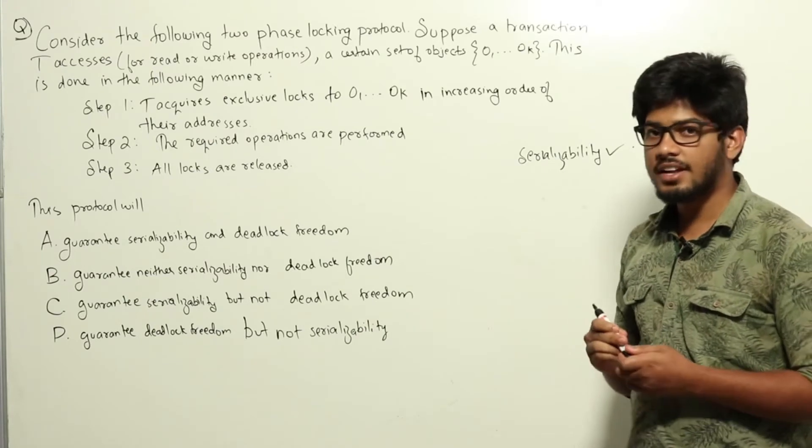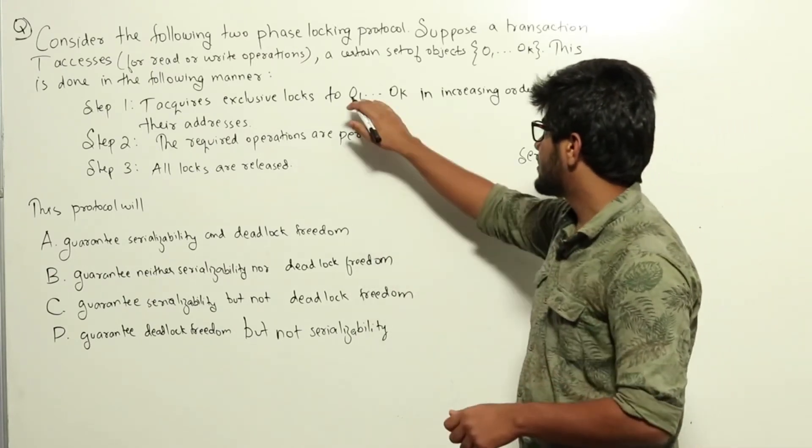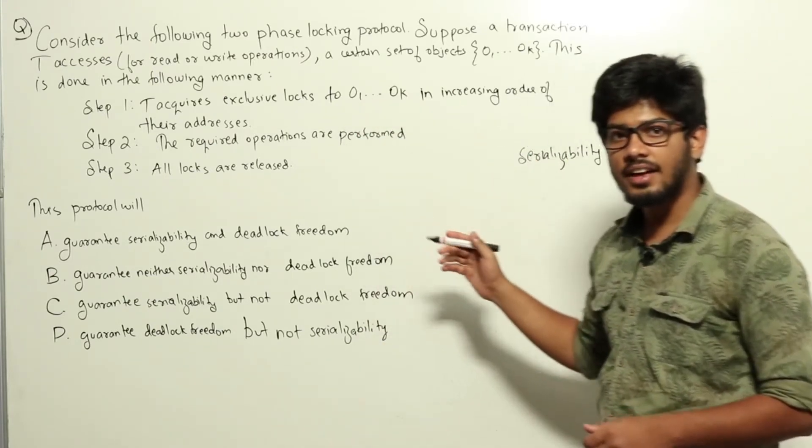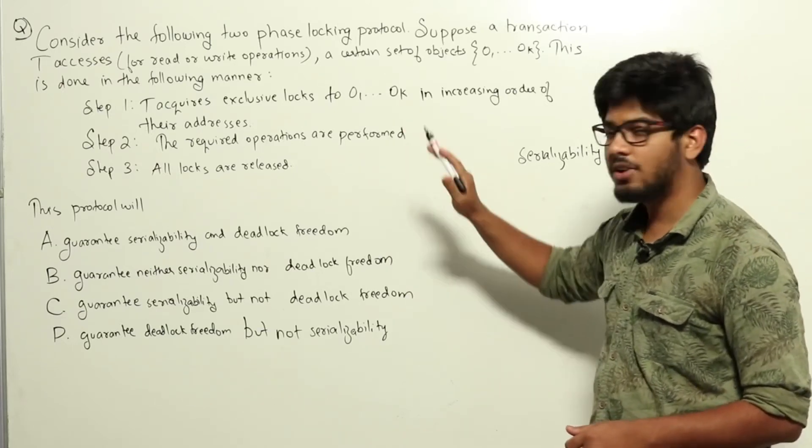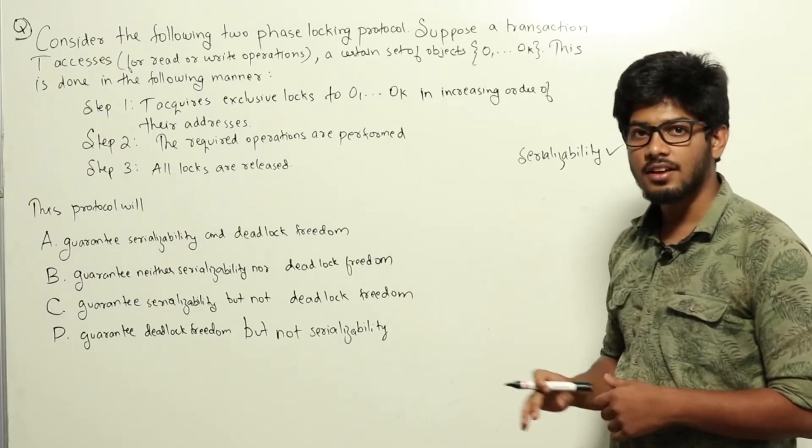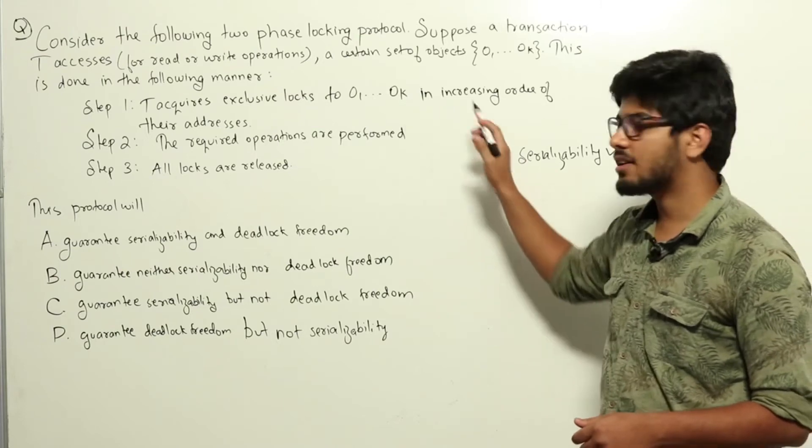If some transaction has to access, let's say 5 objects, it will start acquiring locks to the objects only in the increasing order of their addresses, which means that there can never be circular wait condition.